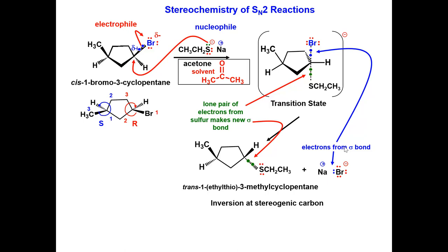Thus the stereogenic carbon is inverted and a trans product is formed. Notice the green labeled electrons from the sulfur have now formed a new carbon-sulfur bond, and the blue carbon-bromine sigma bond electrons are now on the bromide ion.